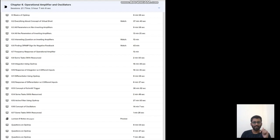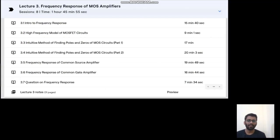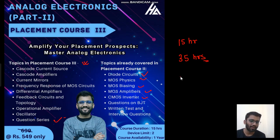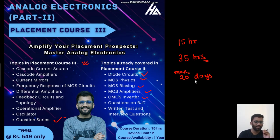It will take you around four to five days for the operational amplifier section, and the rest will take around 10 days. So in around 16 to maximum 20 days, you can complete it — if you study dedicatedly four to five hours per day. Studying four to five hours for 20 days, from zero to advanced, you can complete everything including questions.